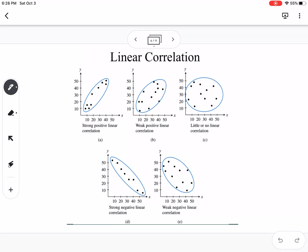So this kind of visualizes those different situations. So we have strong positive, weak positive, no, then strong negative, weak negative.